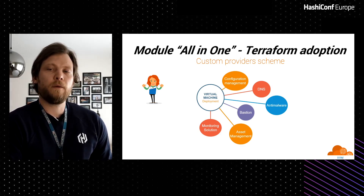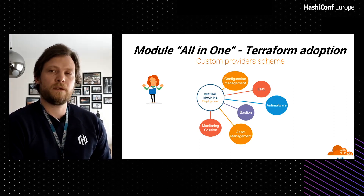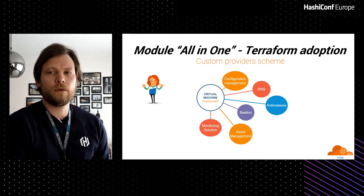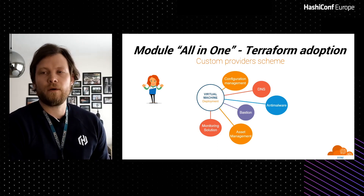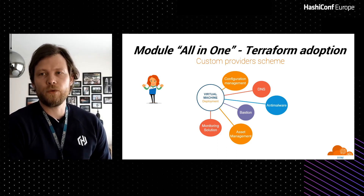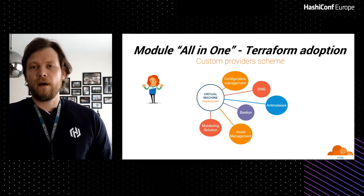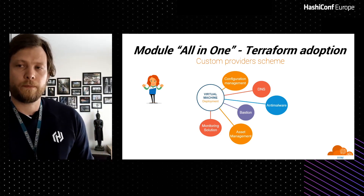We use in-house providers because our APIs are not published externally. Those providers are developed by internal resources. We use GitHub as our VCS, and we currently have 2,400 workspaces split across different organizations. To manage the complexity, Terraform administrators work to provide more simplicity to our users. For advanced users, it's possible to share modules to benefit everyone at Decathlon.